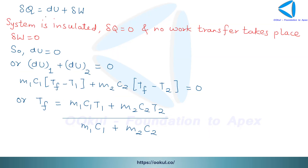According to the first law of thermodynamics, we have δQ = dU + δW. Since the system is insulated, there is no heat transfer, so δQ = 0, and no work transfer takes place, so δW = 0 as well. Substituting these, we get dU = 0. This means the change of internal energy of the system is zero.